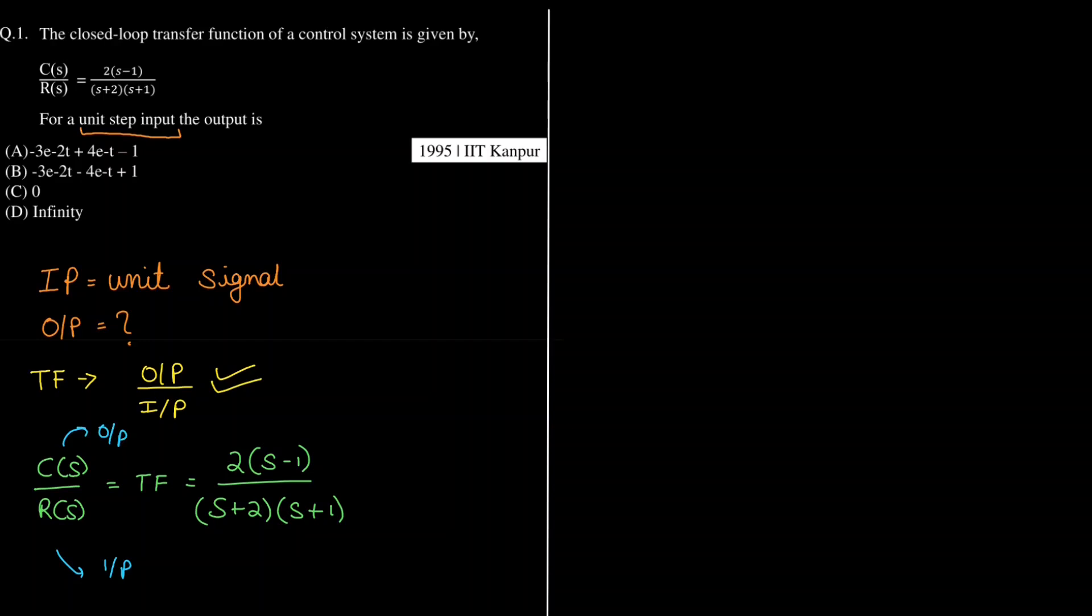Now we need to find the output in the time domain. We need to find C(t), but for finding C(t) we should first know C(s). We will use this equation: C(s) equals transfer function times R(s).